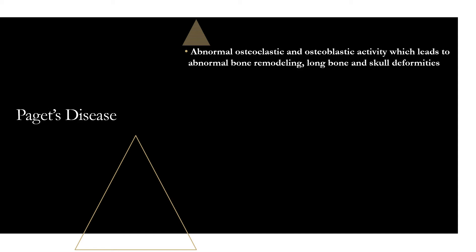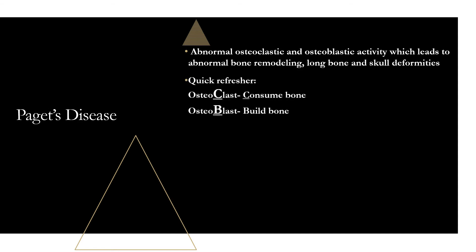A quick refresher: osteoclasts — with a C — are consuming bone, breaking it down to rebuild and reclaim calcium. Osteoblasts — with a B — are building bones. In Paget's disease, you have an increased rate of both of these processes occurring in the body.